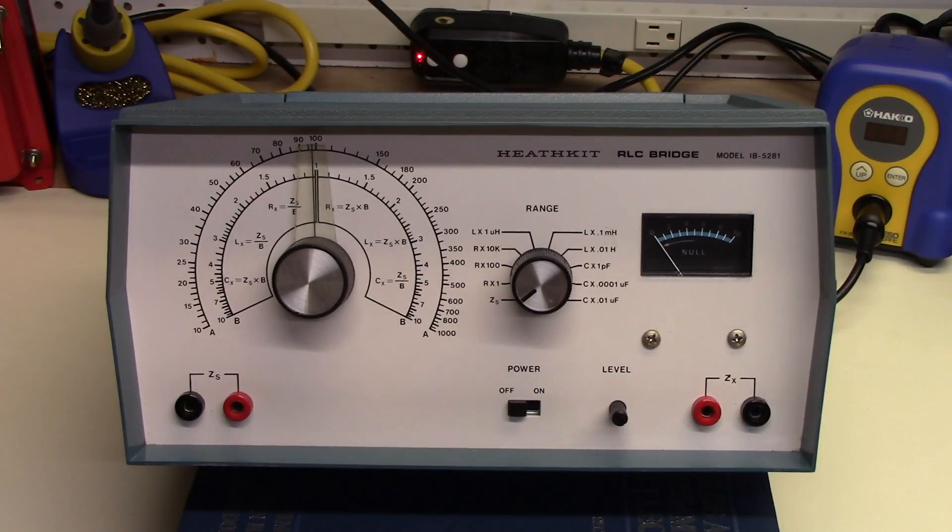In this video, we'll look at a vintage Heathkit RLC bridge, the IB-5281, which was an instrument that could measure unknown inductors, capacitors, and resistors, based on known standards incorporated into the instrument. So let's get started.